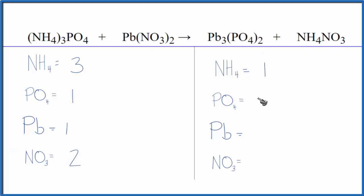That makes it a lot quicker and you're less likely to make errors. So we have this, let's balance it. Looks like I could just put a coefficient of three in front of the ammonium nitrate.